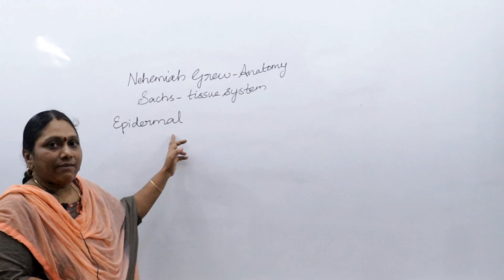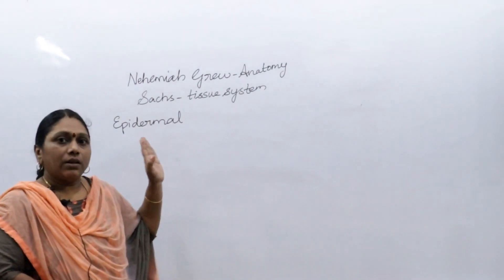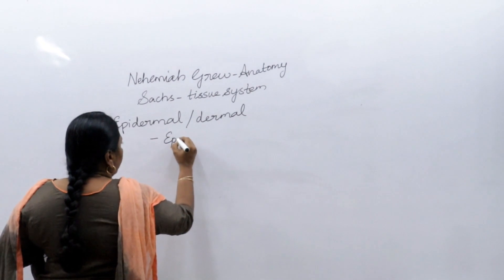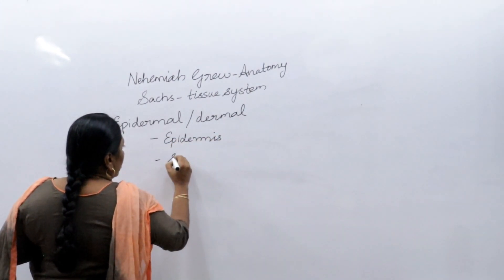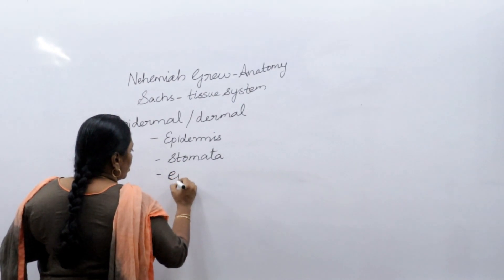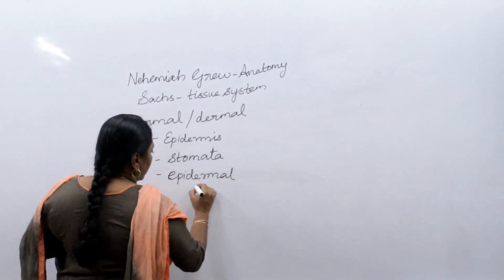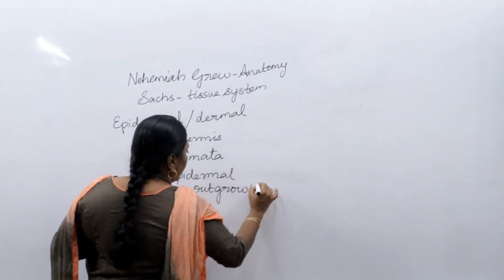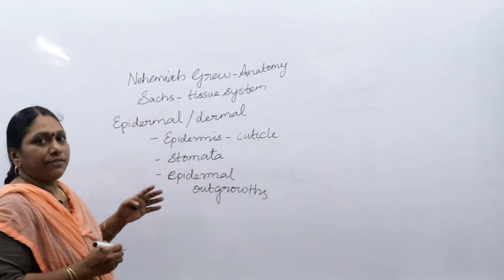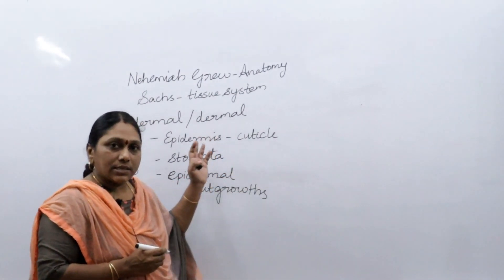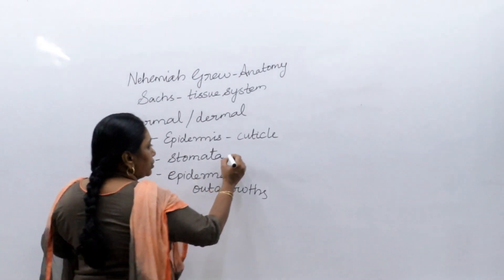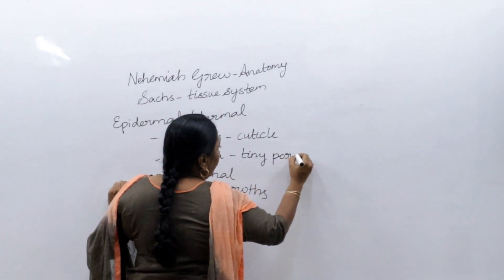In the plant body, the outer layer of a root, stem, or leaf contains tissues called epidermal or dermal tissues. In this system we have the epidermis, which is the outermost layer. A cuticle may also be found on the stem or leaf of some plants, which checks the evaporation of water. Stomata are tiny pores found in the leaf which help in transpiration.